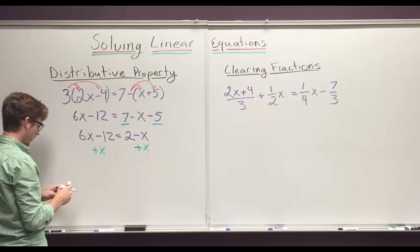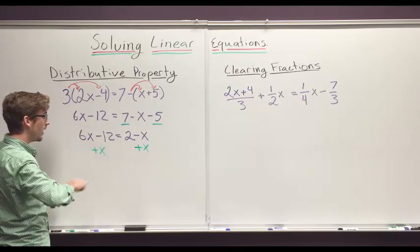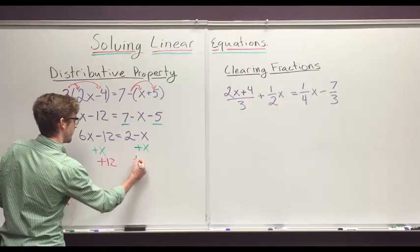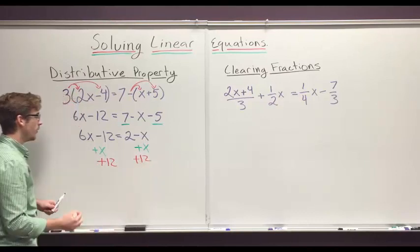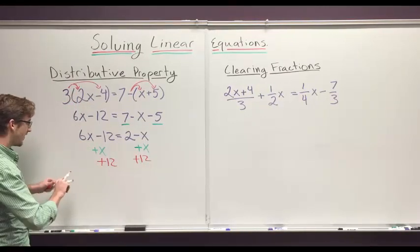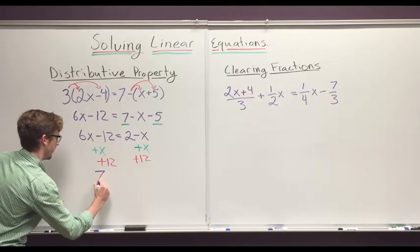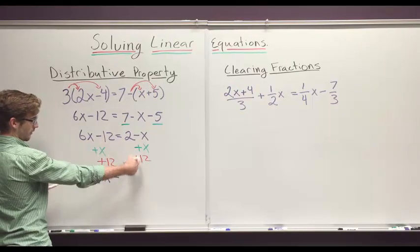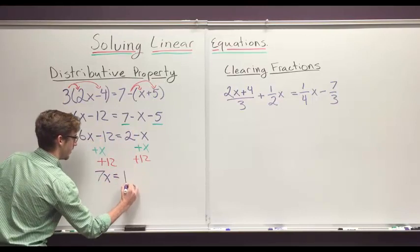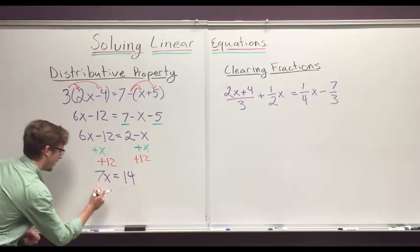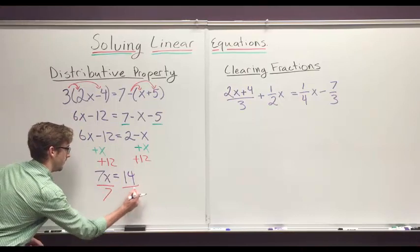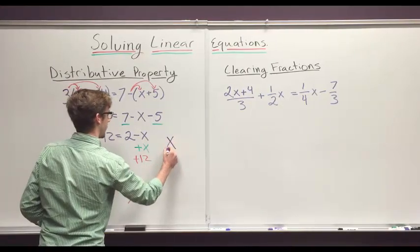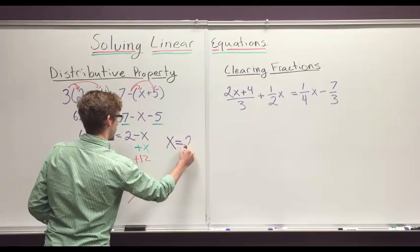And we will add 12 to both sides. So now we have 7x equals 12 on this side gives us 14. And so now we just divide by 7, and we find that x equals 2.